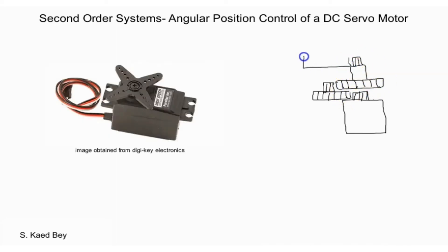First we will consider an application model such as the hobby type DC servo motor. Then we will obtain a simplified DC servo model. We will then use this simplified model to derive the closed loop transfer function in both the continuous S and discrete Z domains.